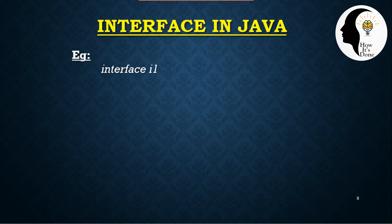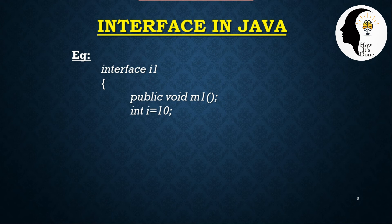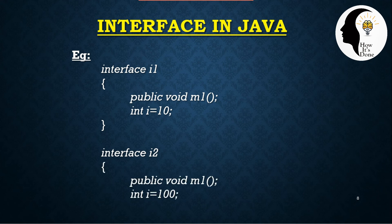To avoid the ambiguity problem, we use interfaces. For example, interface i1 has a public void m1 method and a variable int i = 10, which is automatically static final. Interface i2 also has a public void m1 method and a variable int i = 100. Both interfaces have the same m1 function — we just declare it without a body.